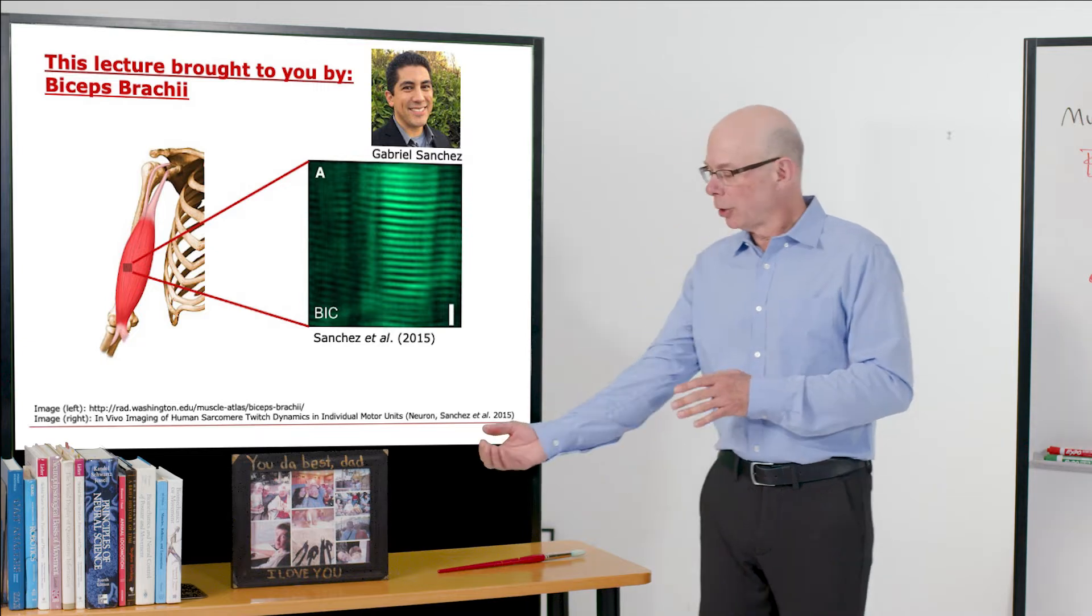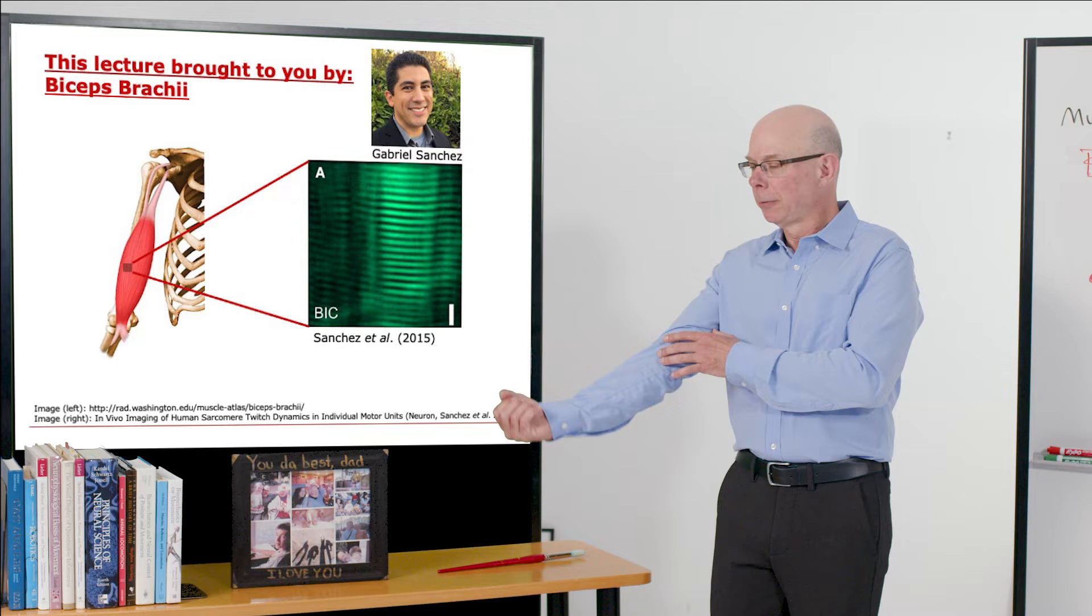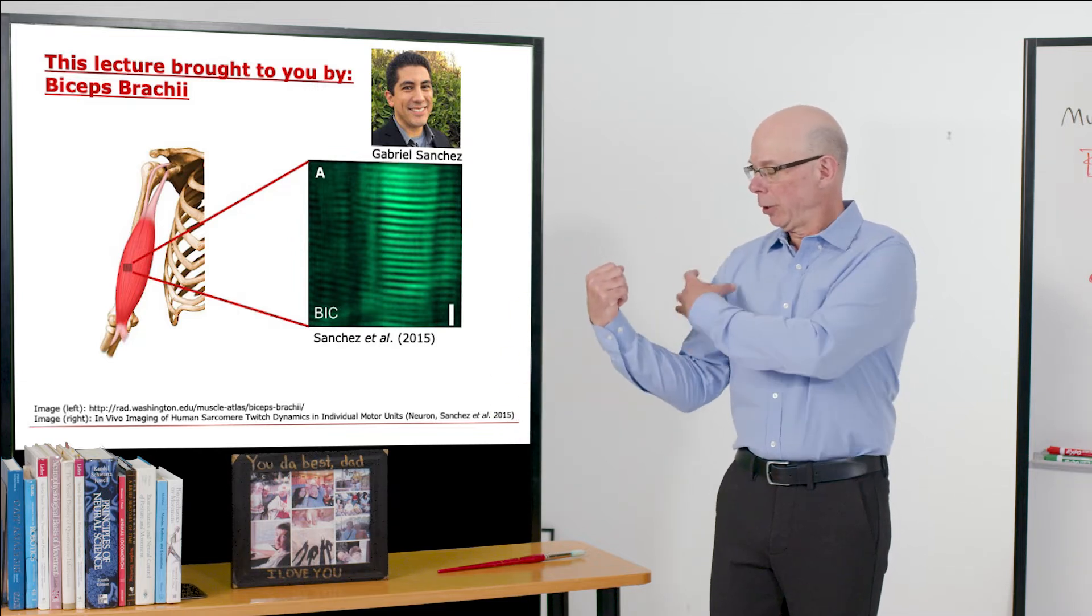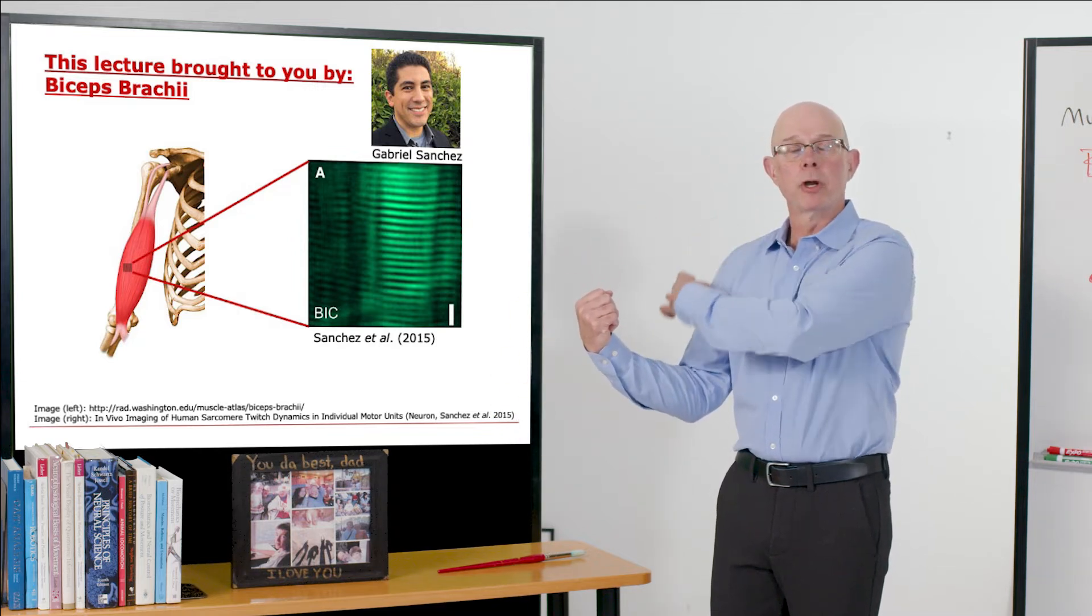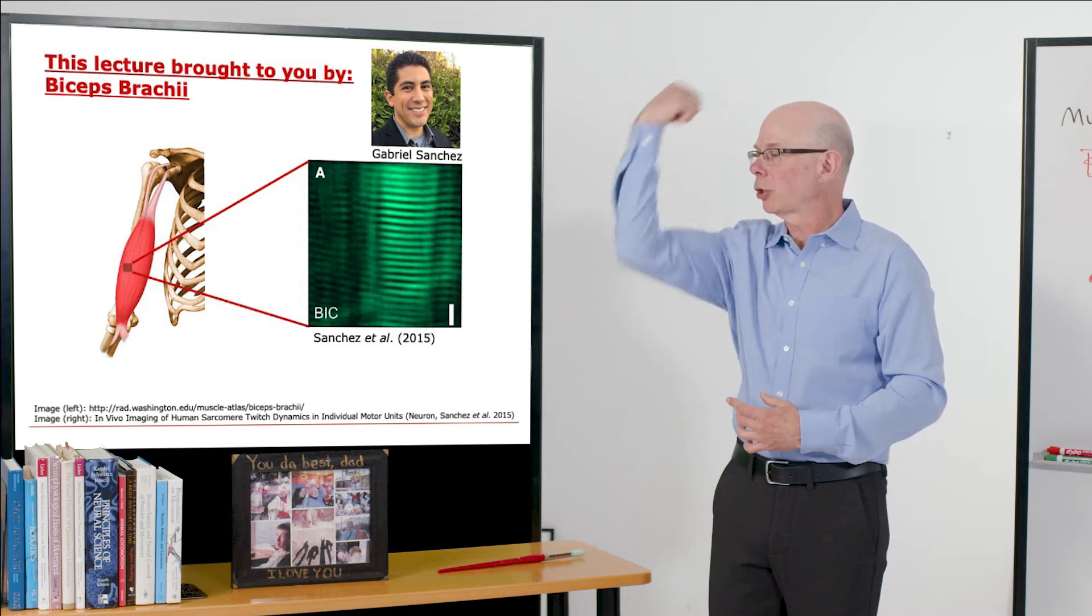So biceps generates a flexion moment about the elbow, so it flexes your elbow, but I mentioned it also crosses in front of the shoulder, so it produces a flexion moment about the shoulder.